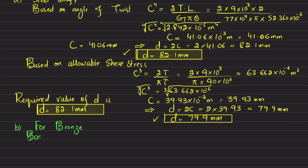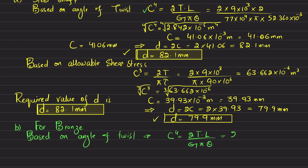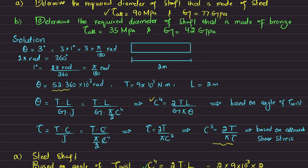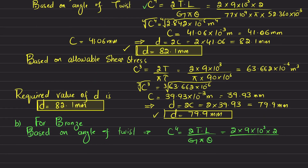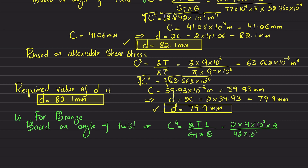Now we perform the same analysis for the bronze shaft. Based on angle of twist, C⁴ = 2TL / (Gπθ). Substituting: T = 9 × 10³ N·m, L = 2 m, G for bronze = 42 × 10⁹ Pa, θ = 52.360 × 10⁻³ rad. This gives C⁴ = 5.210 × 10⁻⁶ m⁴.